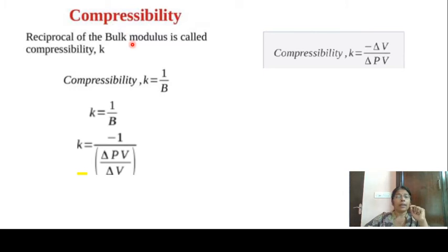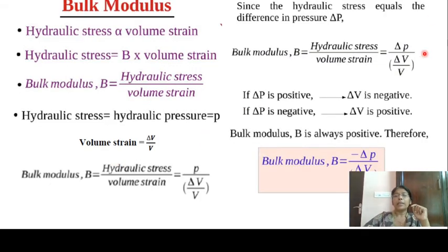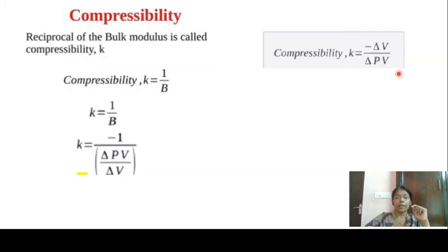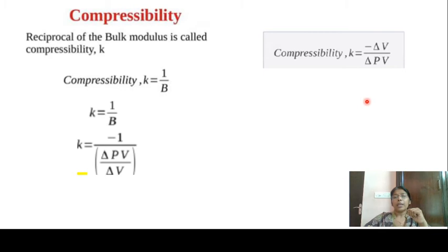B equals minus ΔP divided by (ΔV/V), which can also be written as B equals ΔP·V divided by ΔV. The reciprocal of bulk modulus is called compressibility: K equals 1/B. So K equals minus ΔV divided by (ΔP · V).